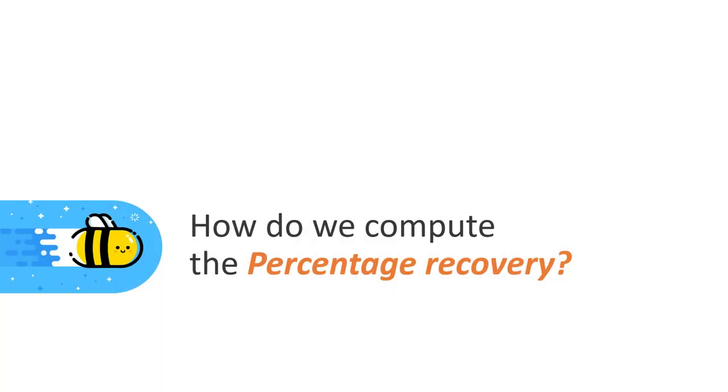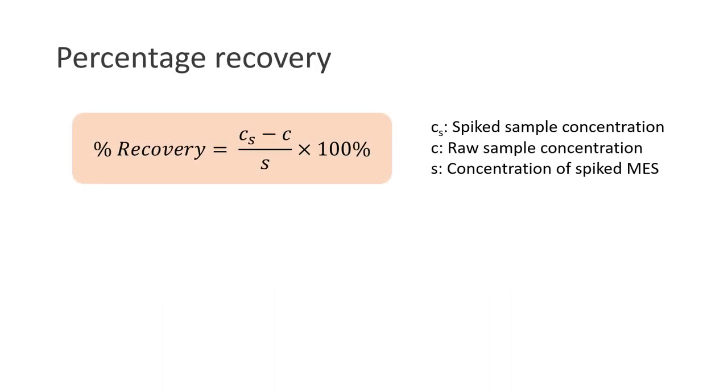So after collecting the experimental results, how do we compute or calculate the percentage recovery? Well, it can be calculated using this simple equation: the percentage recovery is equal to the difference between the spike sample concentration and the raw sample concentration, divided by the concentration of the spike multi-element standard, multiplied by 100 percent.